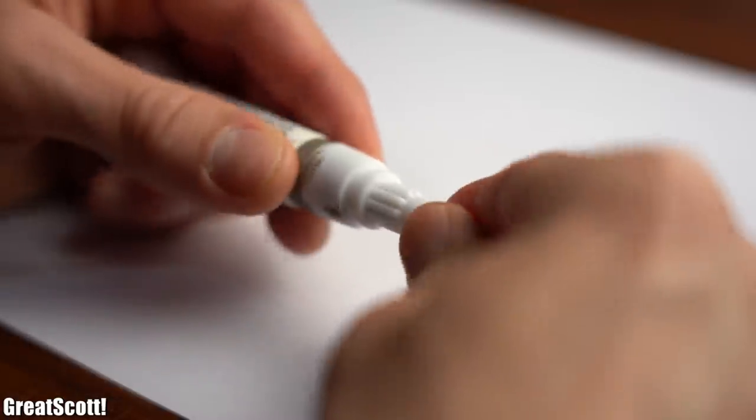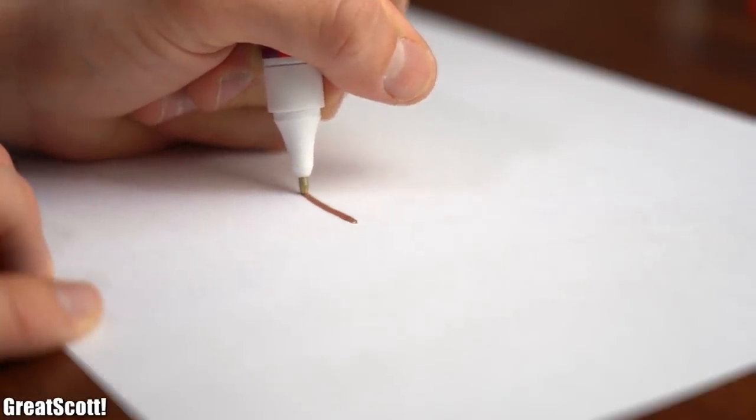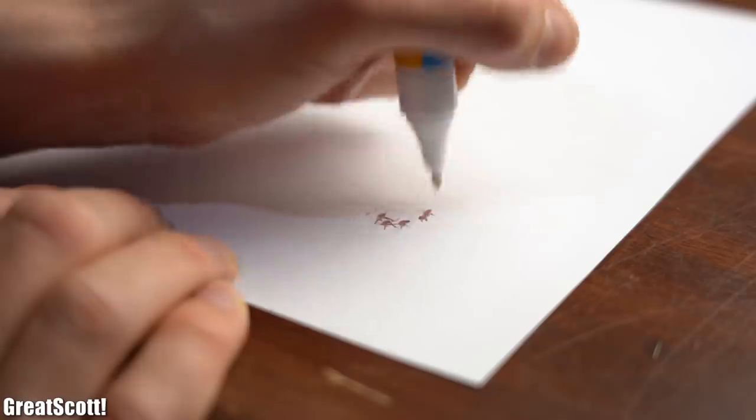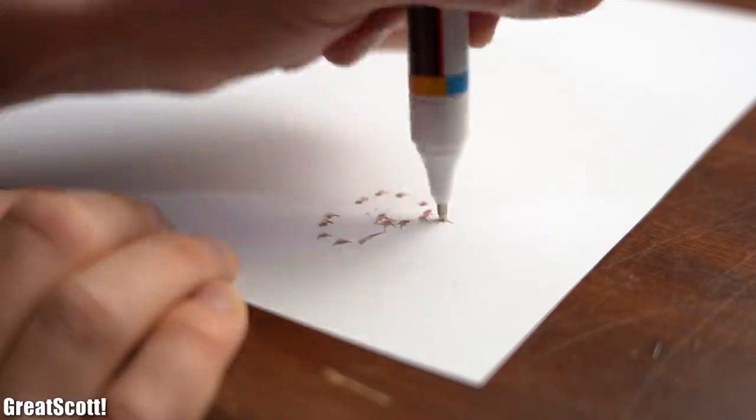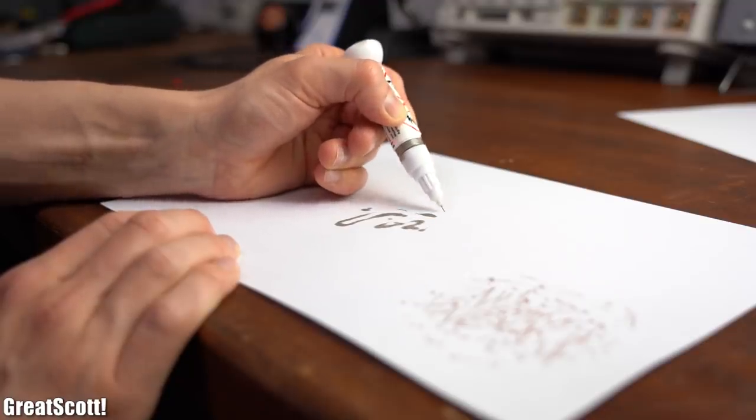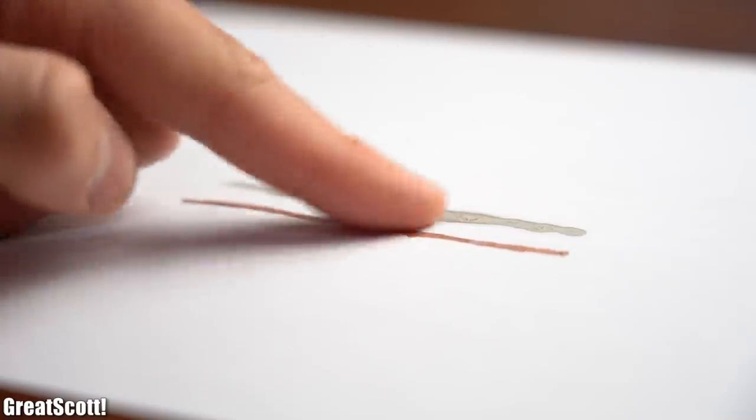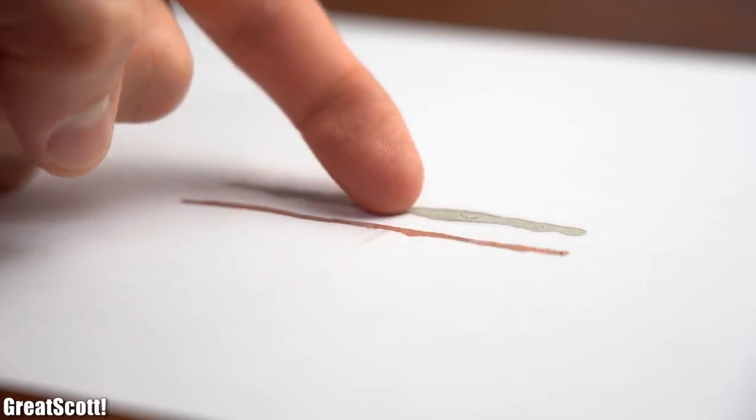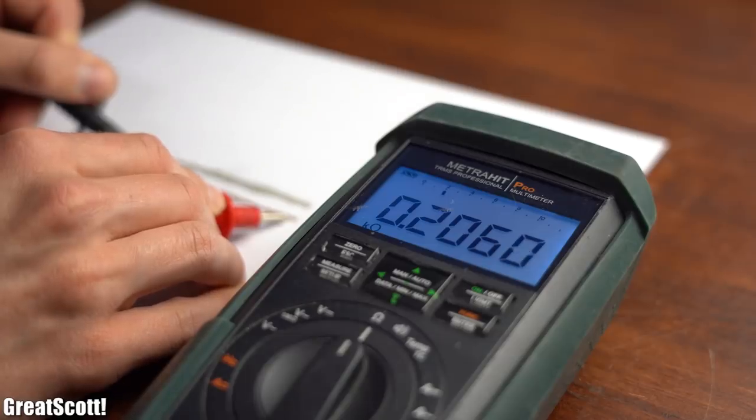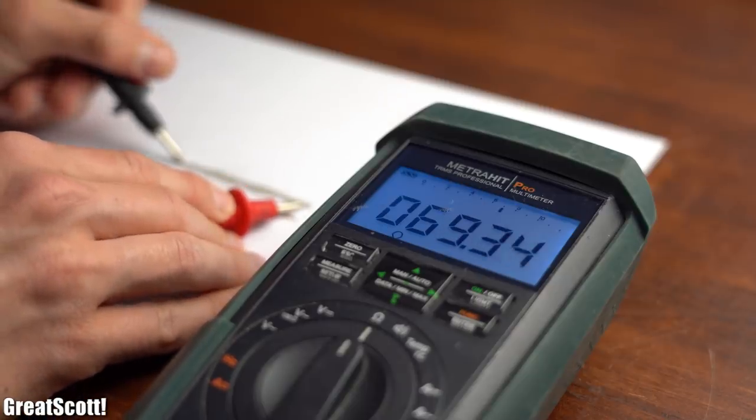And for the initial test whether both pens are truly conductive I simply drew a basic line with no specifications regarding the width onto a piece of paper. One of the first things I noticed though was that the Chinese pen didn't feel like working with me most of the time. And it was a bit awkward to handle the silver pen since you have to constantly apply pressure. But nevertheless after around 20 minutes both lines were reasonably dry and by using a multimeter with its resistance function I was able to measure a value of below 200 Ohm for both pens which means that they are in fact electrically conductive.